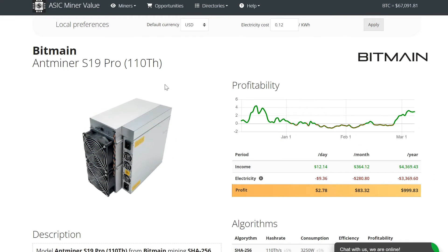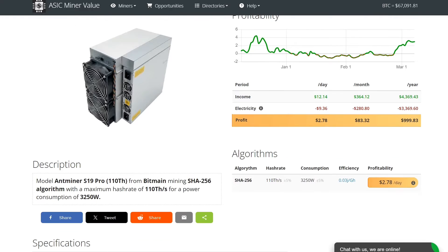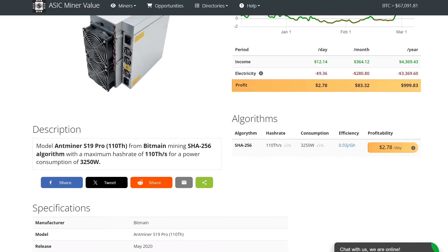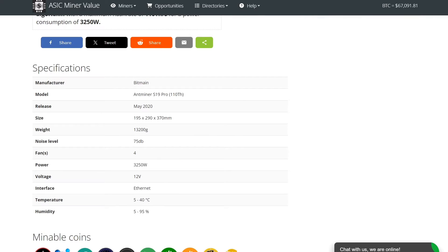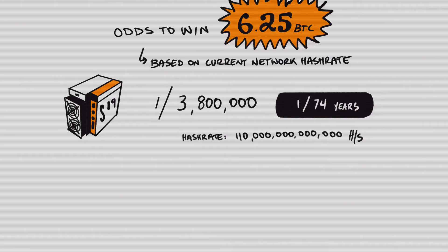If you want to increase your hash or increase your rate, the most expensive miner you can buy today is the S19 Pro. It has 110 terahash or 110 trillion hashes per second. So your chances to get the 6.25 Bitcoin reward roughly one in 3,800,000 or your chances of roughly getting it in one out of every 74 years.